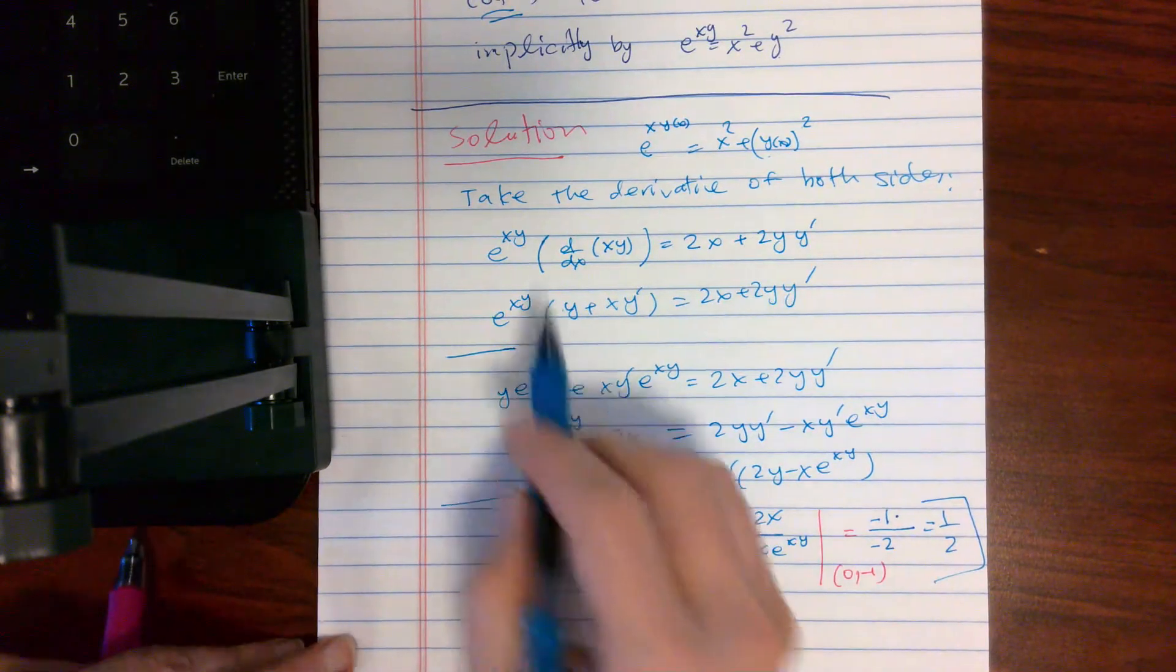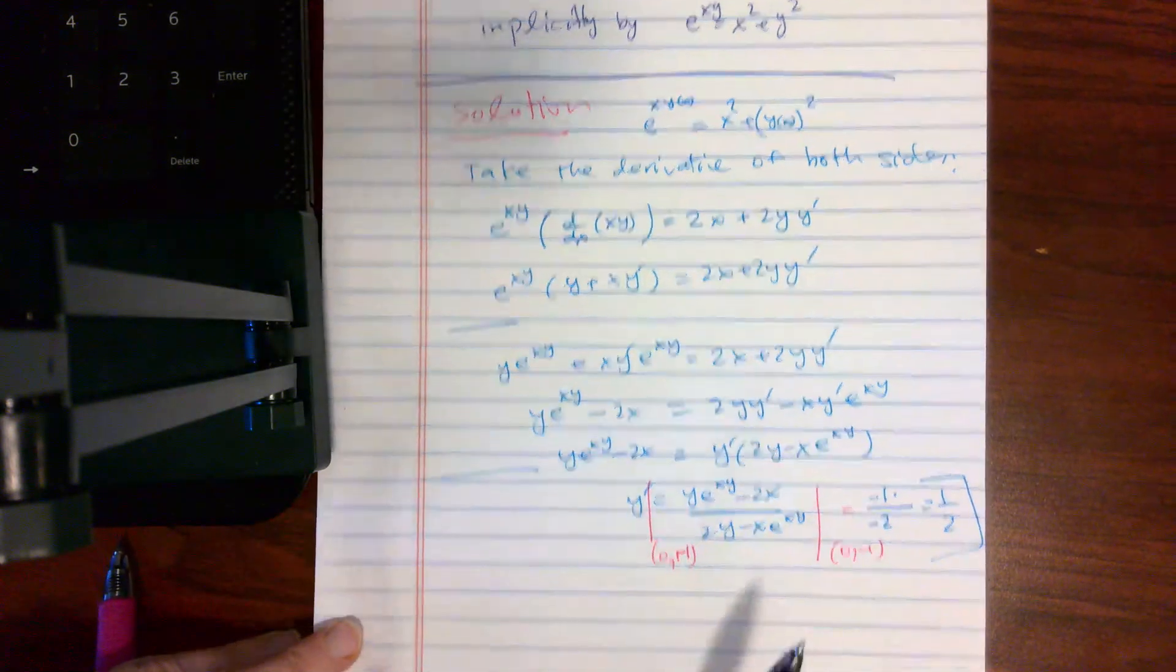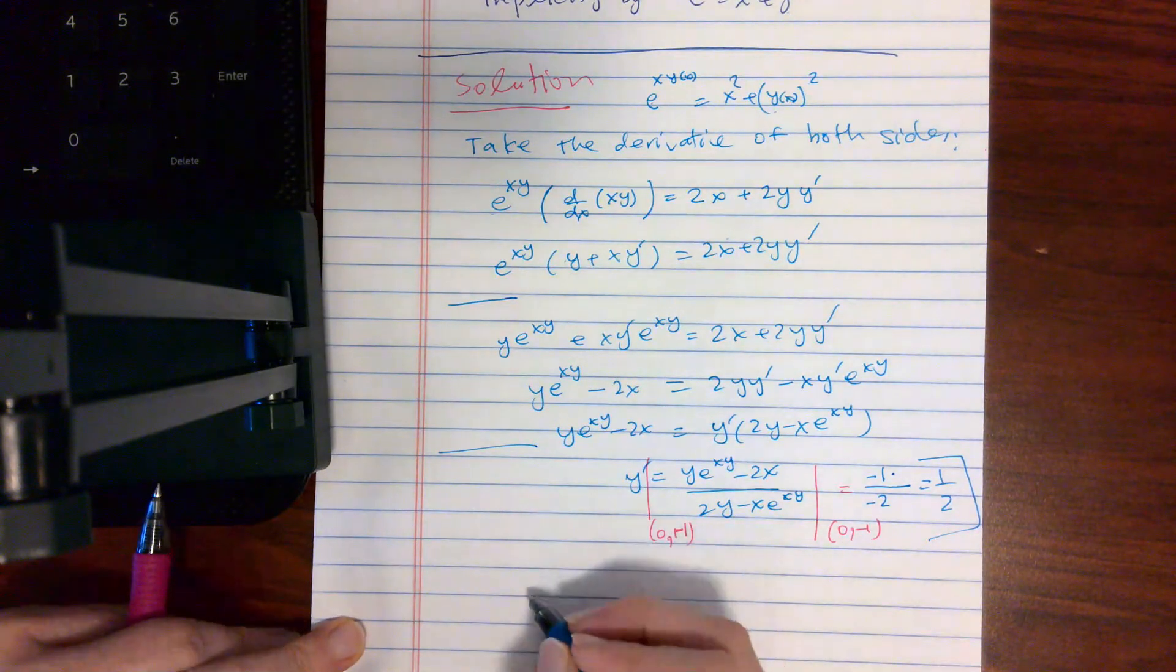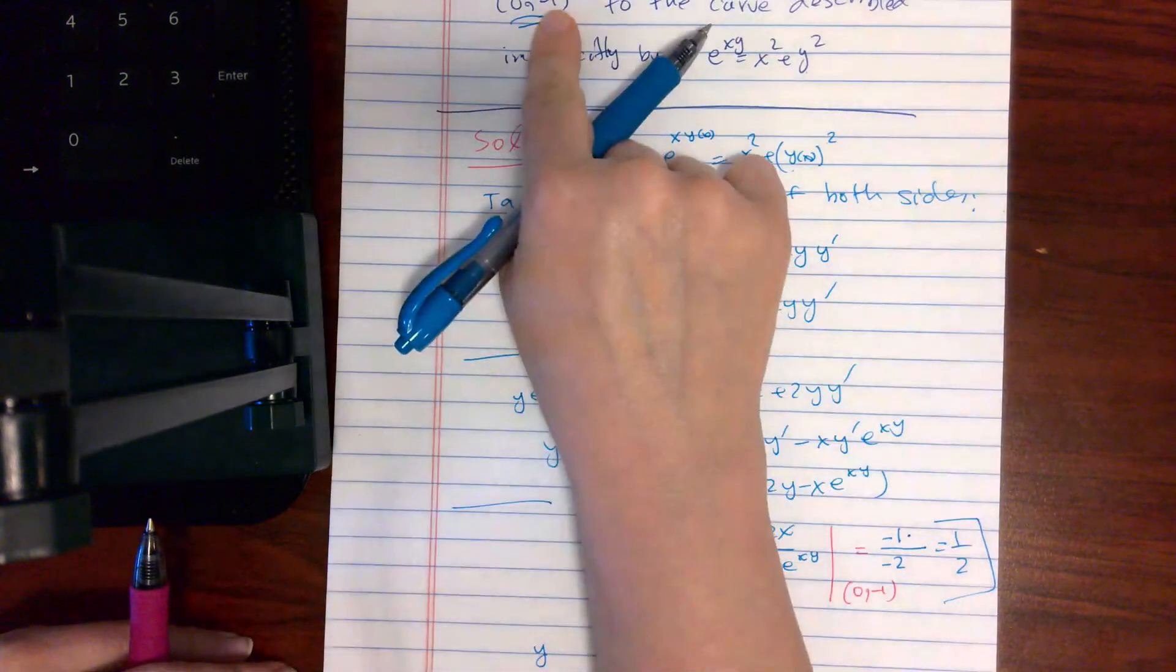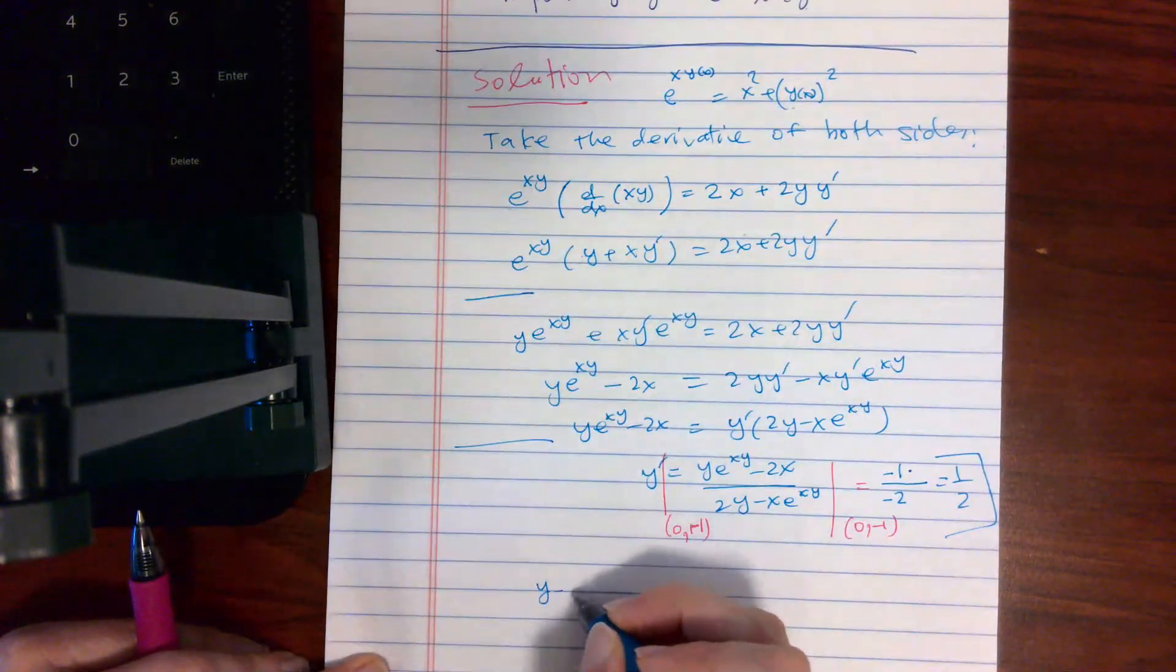So how many steps? Derivative of both sides, simplify for y', plug in the values. Now the last step is to write down the equation of the tangent line. So y minus, what is the point? 0 and 1. So y minus, minus 1, which is y plus 1.